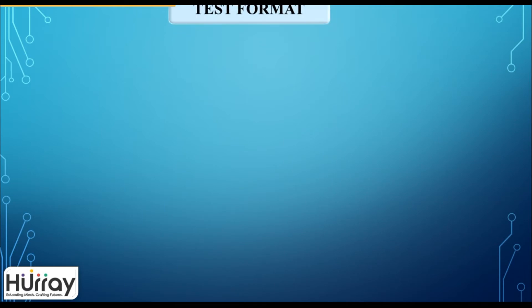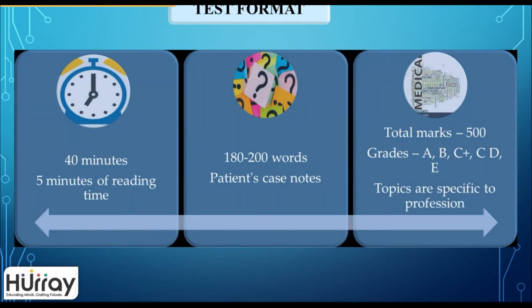Let's look at the test format. You have a total of 45 minutes to complete your writing — 5 minutes to first read the case notes and 40 minutes to write. You can write approximately 180 to 200 words. You need to read the patient's case notes before you begin to write. You have a total of 500 marks, which are given as grades of A, B, C+, C, D, and E.